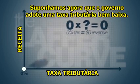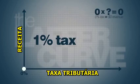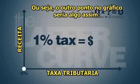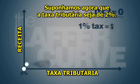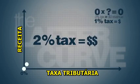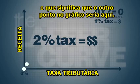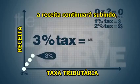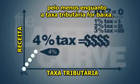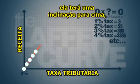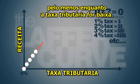Now suppose the government chooses a very small tax rate, say 1%. The government will then begin to receive some revenue from citizens, meaning another point on the curve appears. At 2%, it will receive even more revenue. And if the government keeps raising the rate, revenue will continue to go up, at least in the low tax rate part of the graph, giving the curve an upward slope.